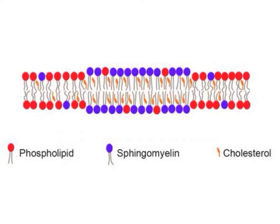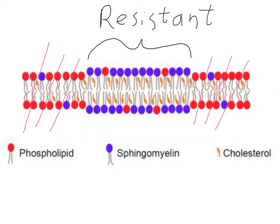When such a detergent is added to cells, the fluid membrane will dissolve while the lipid rafts may remain intact and could be extracted. Because of their composition and detergent resistance, lipid rafts are also called detergent-insoluble glycolipid-enriched complexes, or DIGs, and are also known as detergent-resistant membranes, or DRMs. However, the validity of the detergent-resistant methodology has recently been called into question due to ambiguities in the lipids and proteins recovered, and the observation that detergents can cause solid areas to form where they were not previously present.